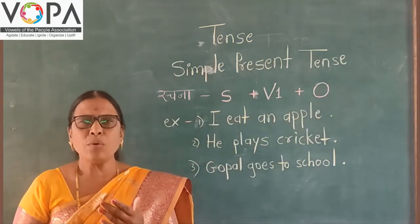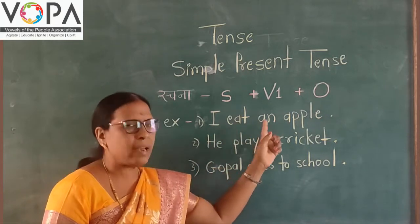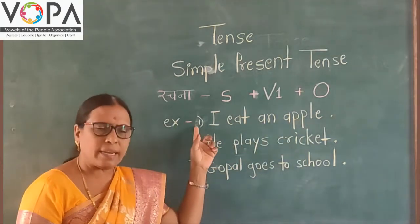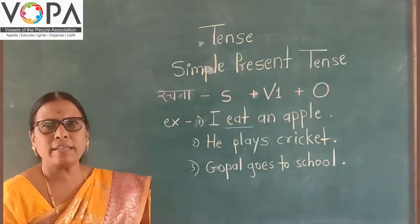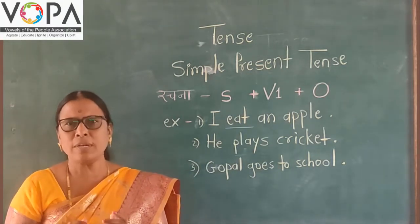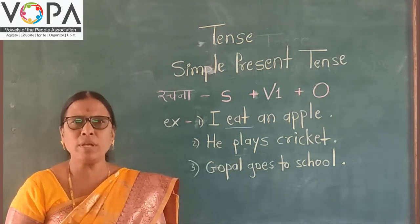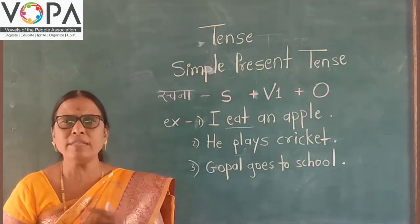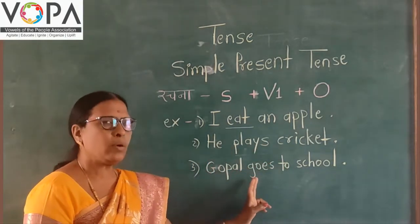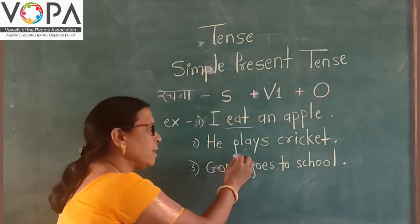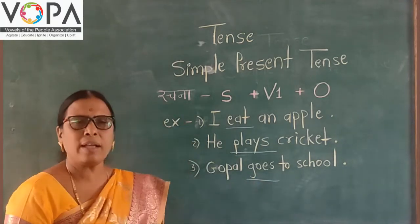Now we see the examples of this tense. The example is: I eat an apple. This sentence is of simple present tense because the word 'eat' is in present form. For example, he plays cricket; Gopal goes to school. For third person singular subjects, we add -s or -es to the verb.